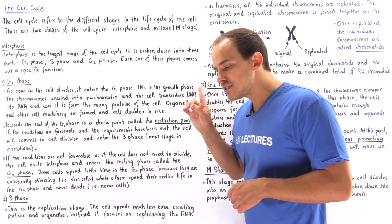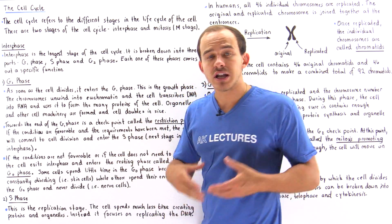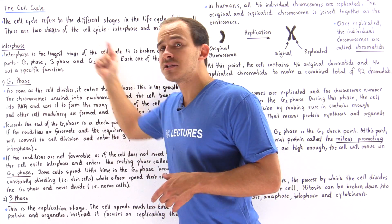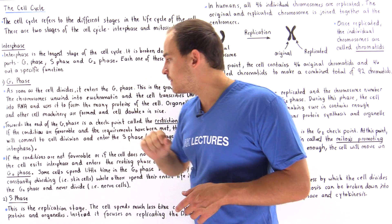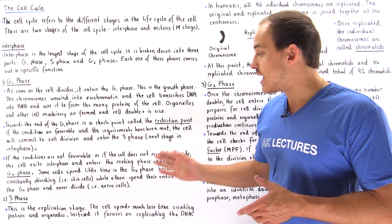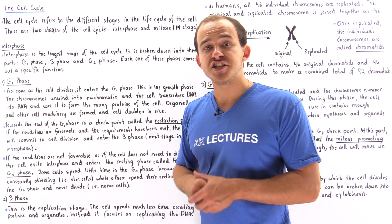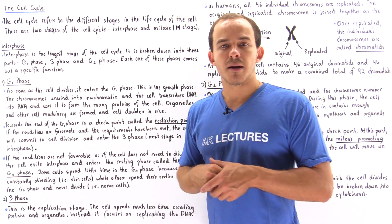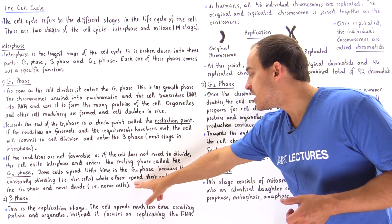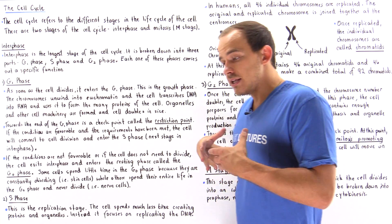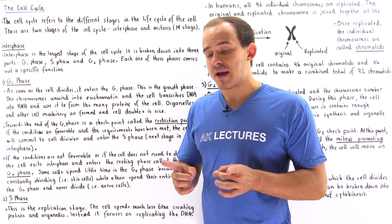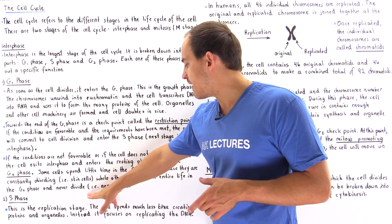However, what happens if the cell doesn't actually want to divide? If the conditions are not favorable or the requirements have not been met, the cell exits the G1 phase and exits interphase entirely, entering a completely different phase known as the G0 phase, which is the resting phase of the cell cycle. Some cells spend very little time in the G0 phase because they need to continually divide — examples include skin cells, intestinal cells, and stomach cells. On the other hand, other cells spend their entire lifetime in the G0 phase, meaning they do not actually divide. One example is the nerve cell.